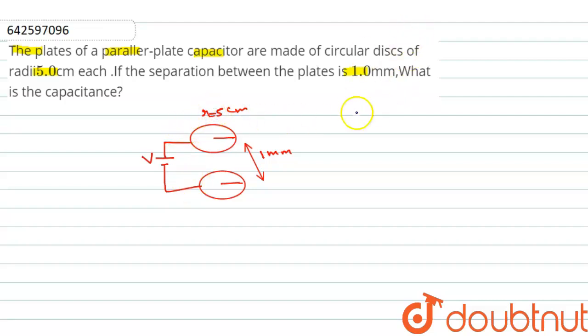As we know that the capacitance C is equal to A epsilon naught divided by d.